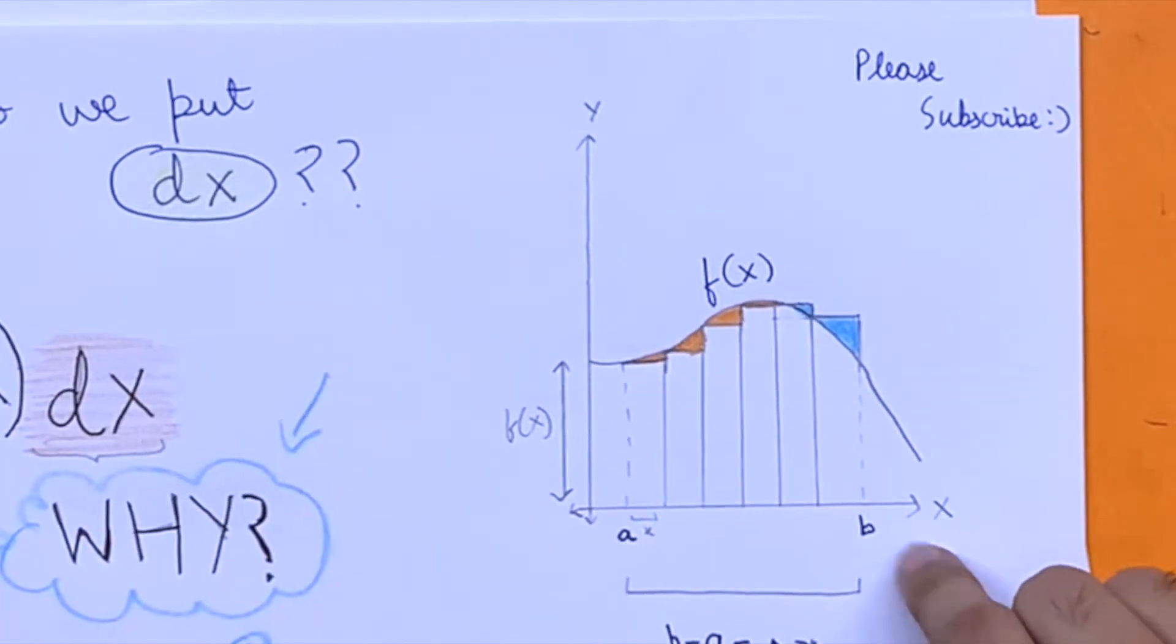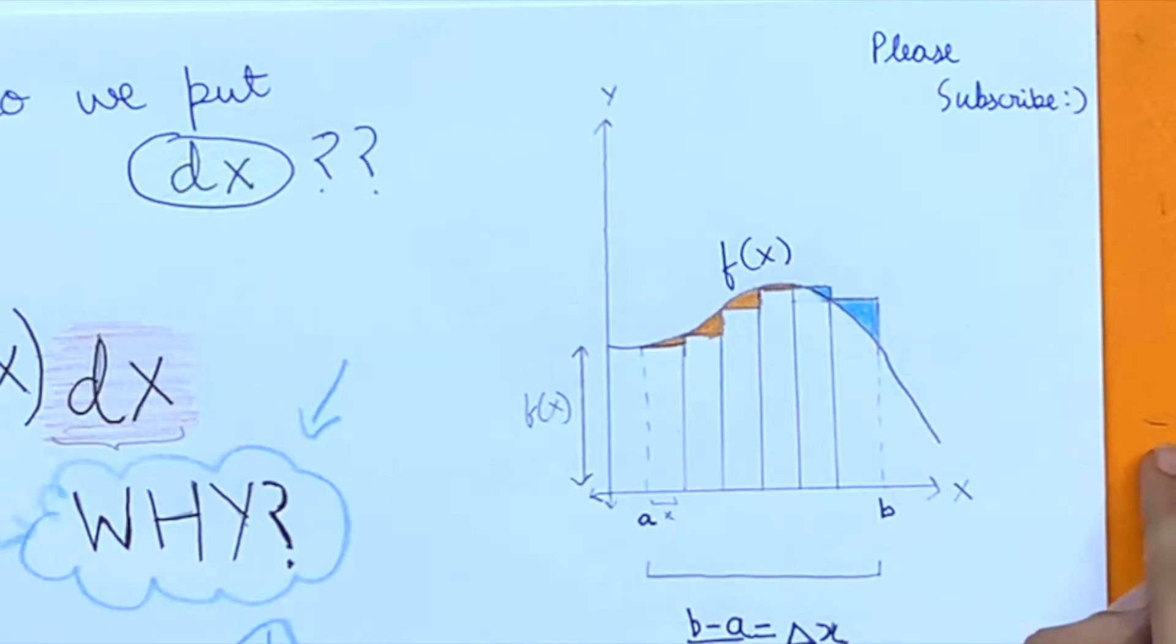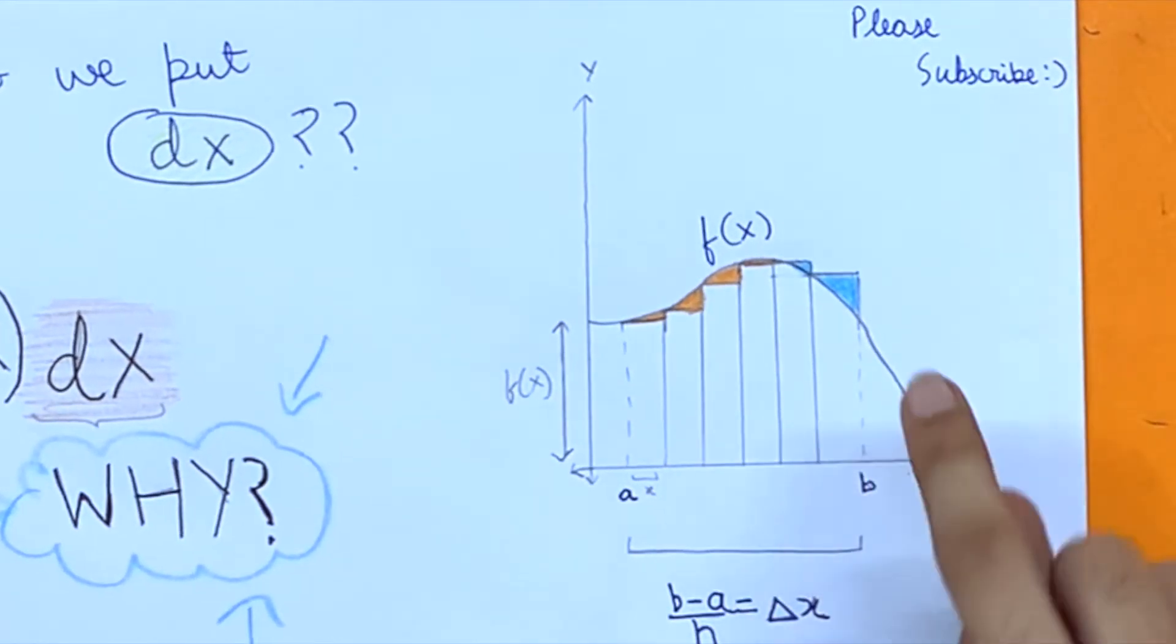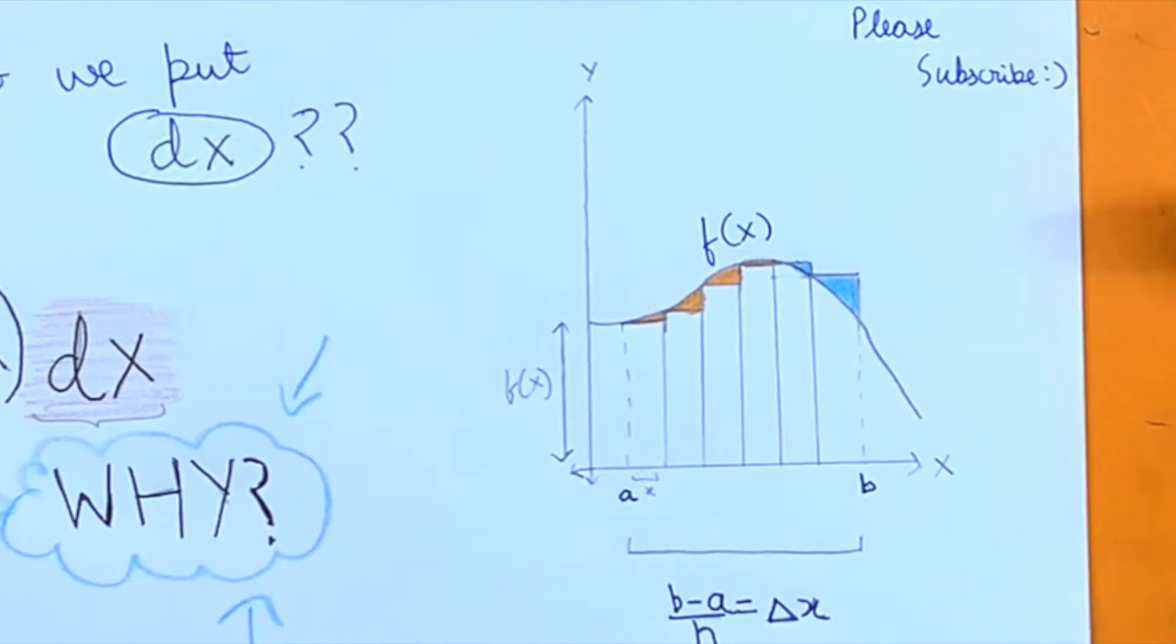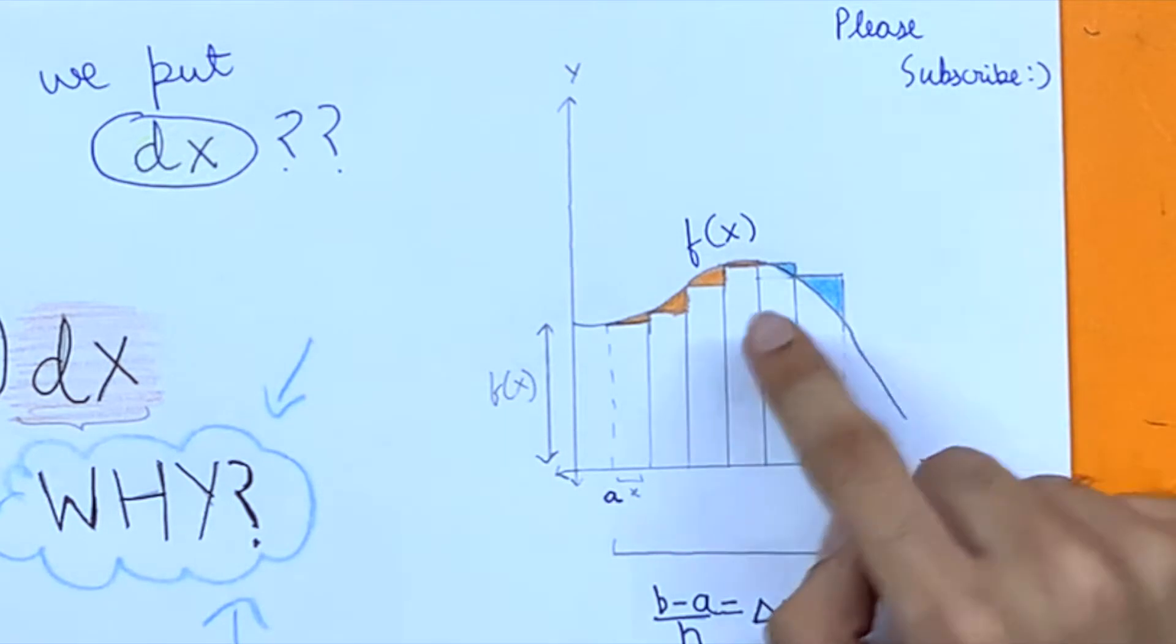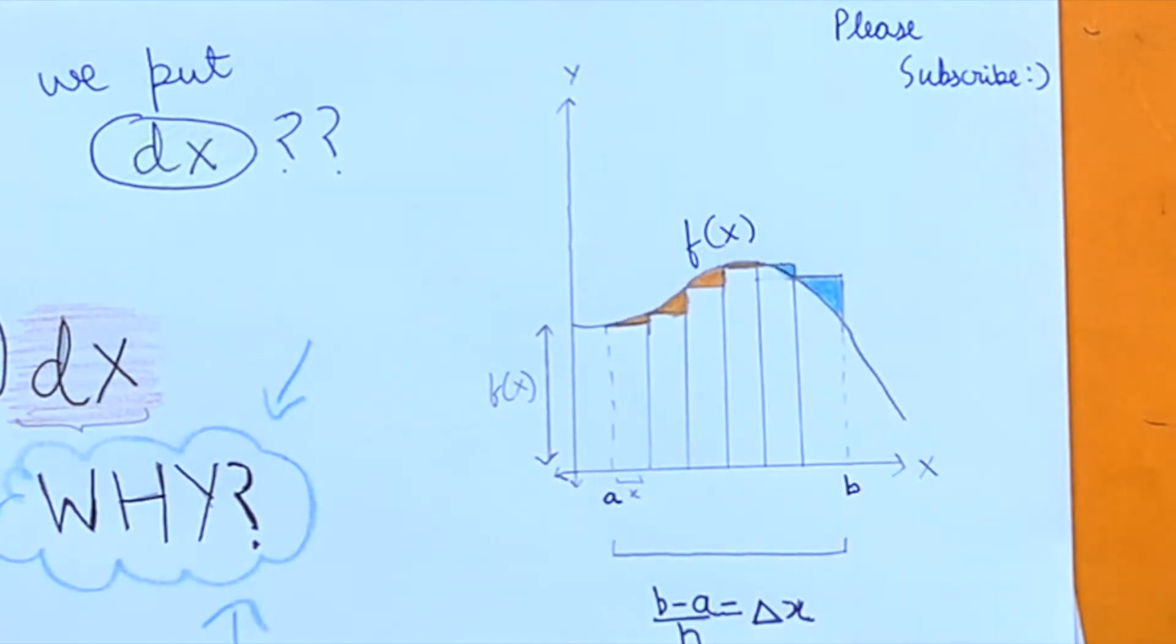If you look at this graph, this is our function f of x and we basically have to find the integral from a to b of this function. So that is just the area under the graph. But how will we calculate the area under a graph or let's say this curve?